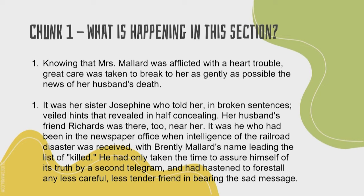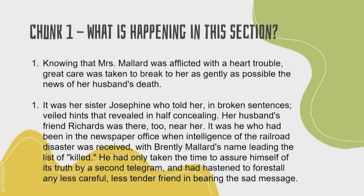"Her husband's friend, Richards, was there, too, near her. It was he who had been in the newspaper office when intelligence of the railroad disaster was received, with Brentley Mallard's name leading the list of killed. He had only taken the time to assure himself of its truth by a second telegram, and had hastened to forestall any less careful, less tender friend in bearing the sad message." So now this is how our short story begins — the first two paragraphs, our first chunk. Our question guiding us is: what's happening in this section? There's a lot more of the story to come, but I want us to know what's happening here before we move any further.